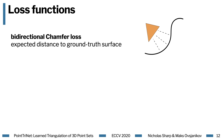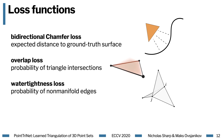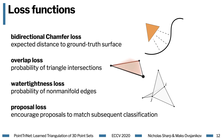An overlap loss penalizes the likelihood that triangles intersect in space. We also make use of a watertightness loss, because in this formulation, manifoldness of the resulting triangulation is not free. We find it highly effective to add a penalty which penalizes the likelihood of non-manifold edges in the resulting triangulation. Lastly, we train the proposal network by encouraging its predictions to match the classifications — intuitively, the proposal network is trying to generate proposals which will receive a high classification score on the next iteration.